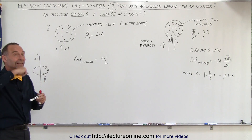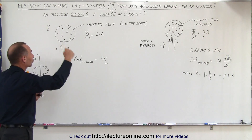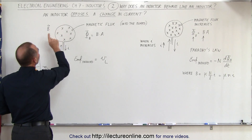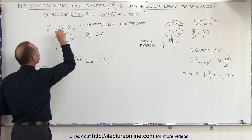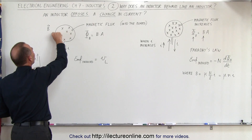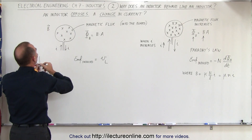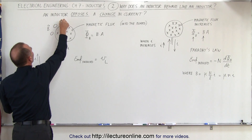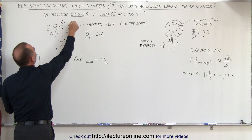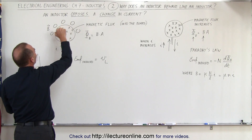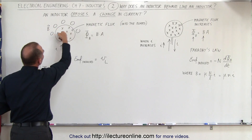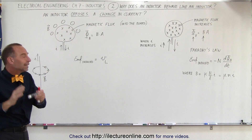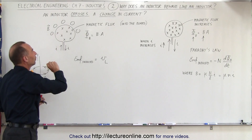When that wire gets put into a circle or a turn, you can see how the magnetic field will go through the loop on the inside and around the outside of the loop. The magnetic field comes back out of the loop, around, out of the board, and then back into the board through the loop.